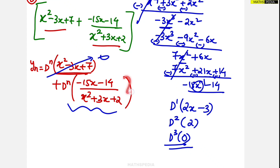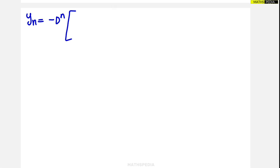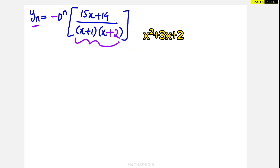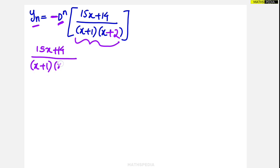The remaining part is a proper fraction — the numerator degree (x power 1) is less than the denominator degree (x power 2) — so we can apply the partial fraction method. We take 15x plus 14 divided by (x plus 1)(x plus 2), which can be written as A divided by (x plus 1) plus B divided by (x plus 2).